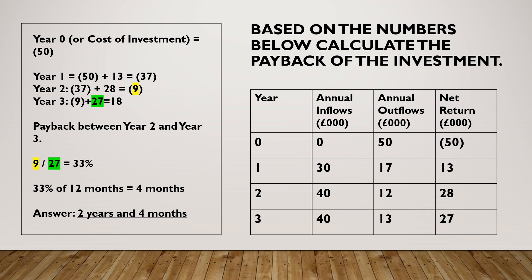To work out the number of months, you take how much you had left to pay — that's the £9,000 highlighted in yellow — and divide it by the net return in the following year, which is £27,000. So 9 divided by 27, times by 100, equals 33.3%.